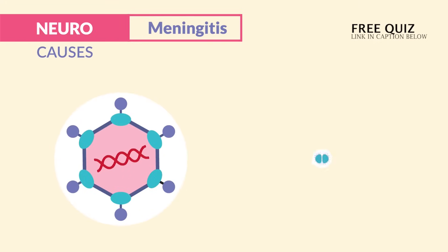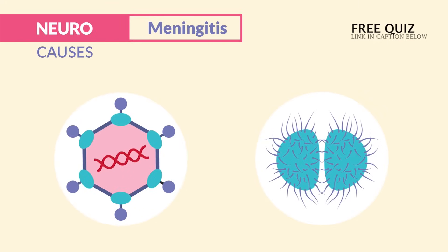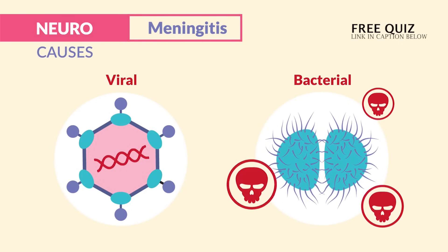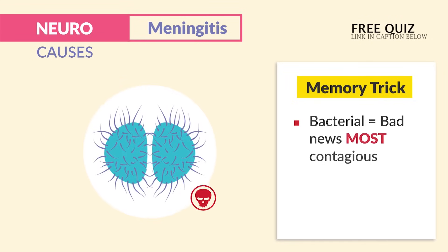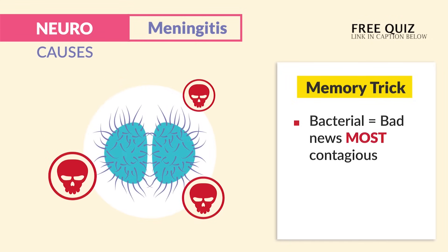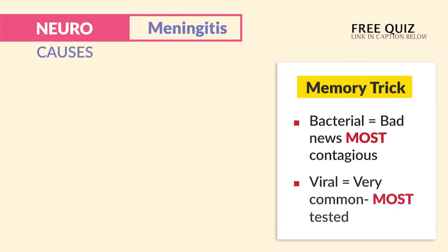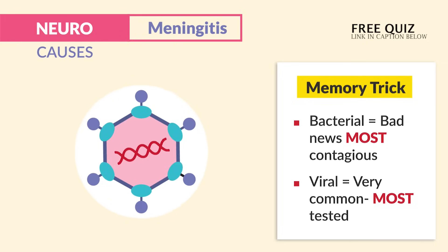For infection, we have two types: viral, which is the most common, and bacterial, which is far worse since it's most contagious. The memory trick we use is bacterial — think 'bad news' since it's the most contagious. And for viral, just think 'very common,' since it's the most tested.